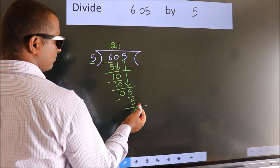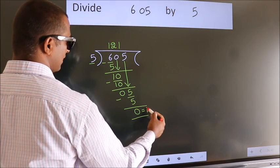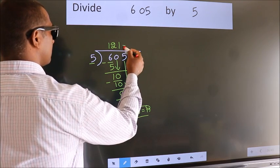No more numbers to bring it down. So we stop here. This is our remainder. This is our quotient.